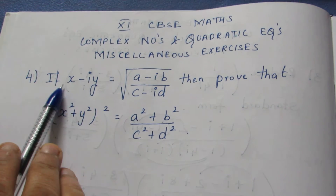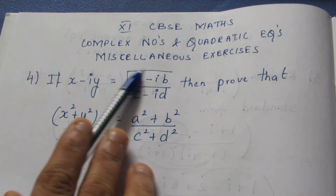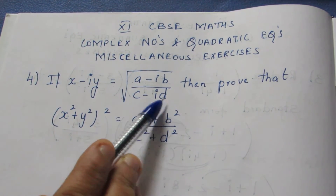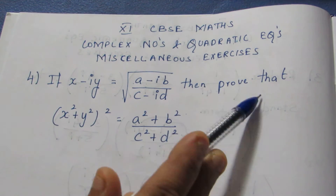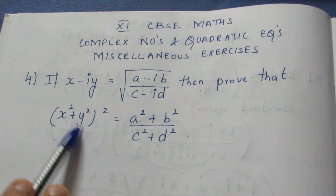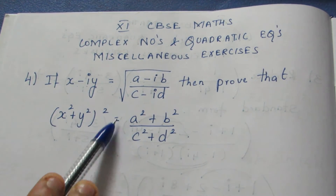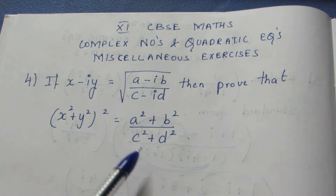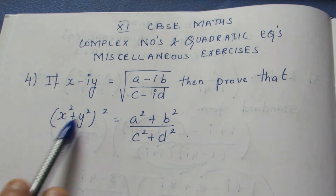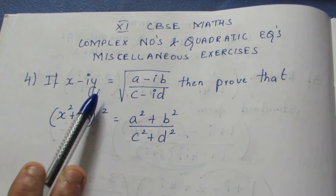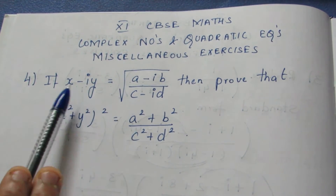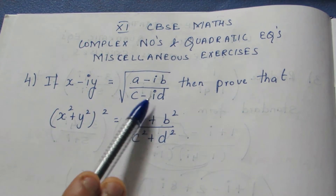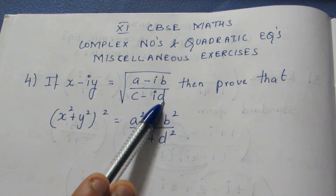If x minus iy equals root of (a minus ib) by (c minus id), then prove that x square plus y square, the whole square, is equal to a square plus b square by c square plus d square. This is given: x minus iy is equal to root of (a minus ib) by (c minus id).